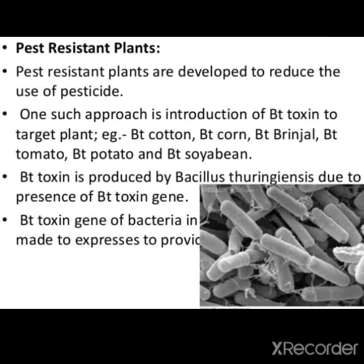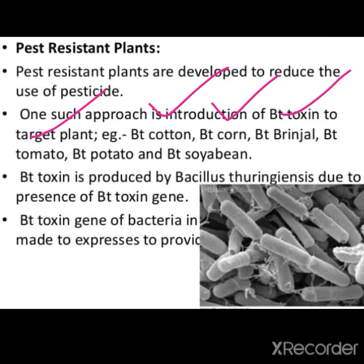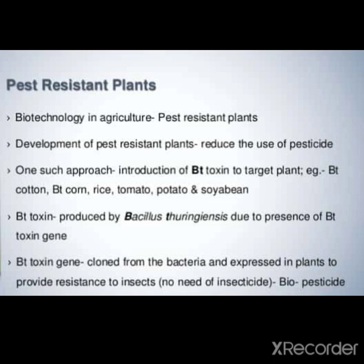So, pest resistance plants de vich ki kita gaya - bt toxin gene transfer karvaya ga hai apne target plant de vich. E de use de naal bt cotton tiyaar kiti gayi hai, bt corn, bt brinjal, bt tomatoes, bt potatoes and bt soya beans tiyaar kite gaye ne. So, ea jo bt toxin gene hai, ee actually present hundi hai ek gram positive bacteria de vich - Bacillus thuringiensis. O de vich ho a toxin isolate karvaya gaya hai, and ees gene nu plant de vich introduce karvaya gaya hai through methods like gene gun, micro injection, jo tools of rDNA technology de vich padhke aaya hai.